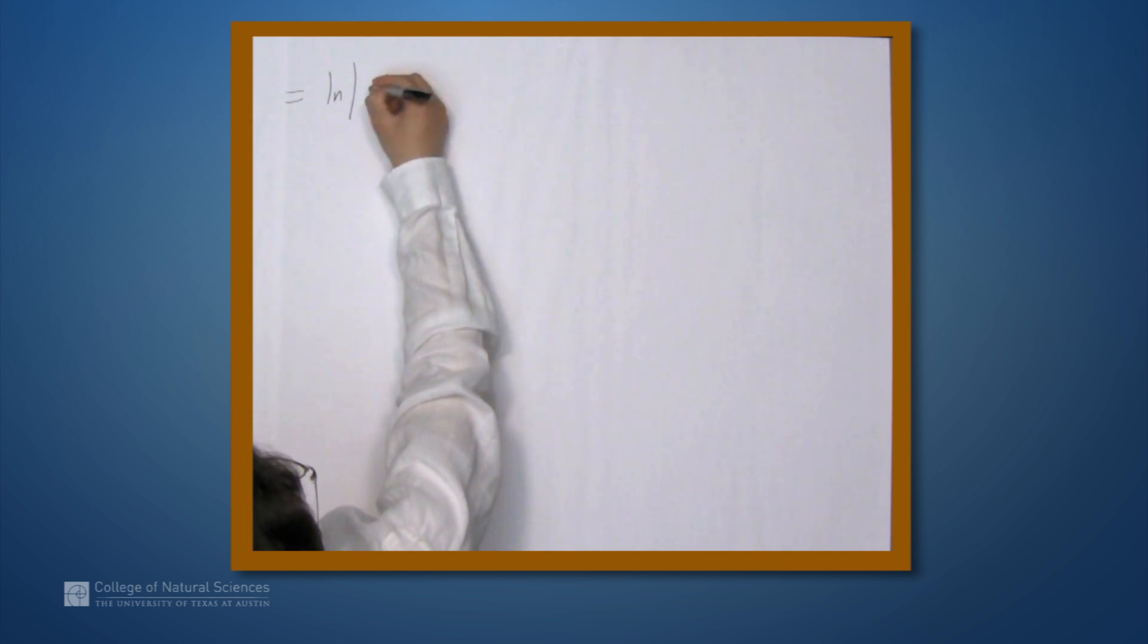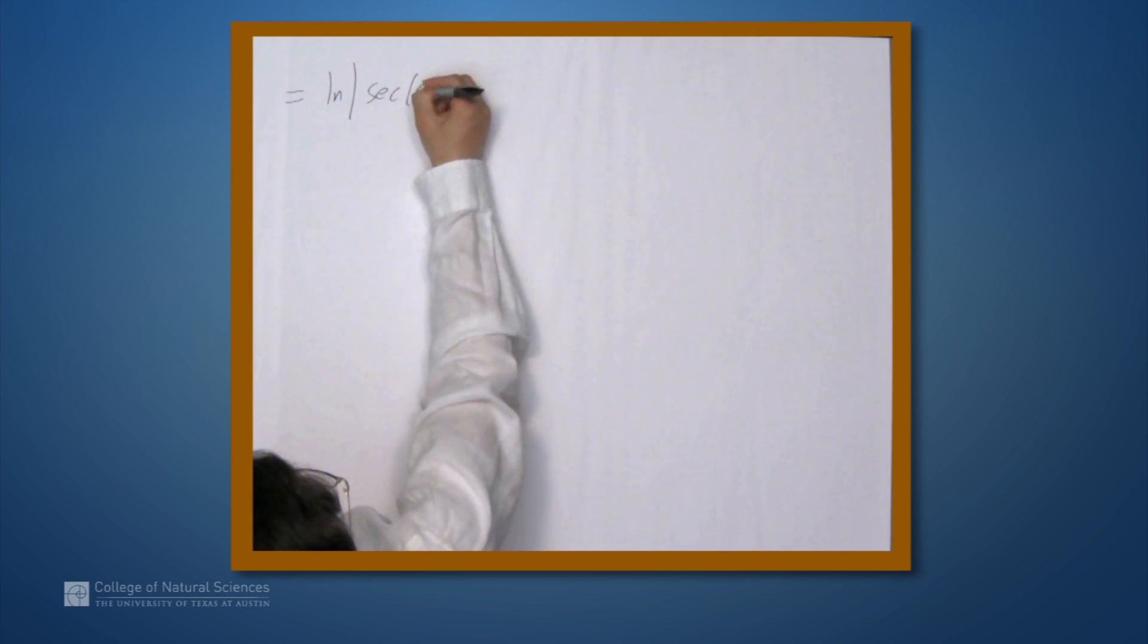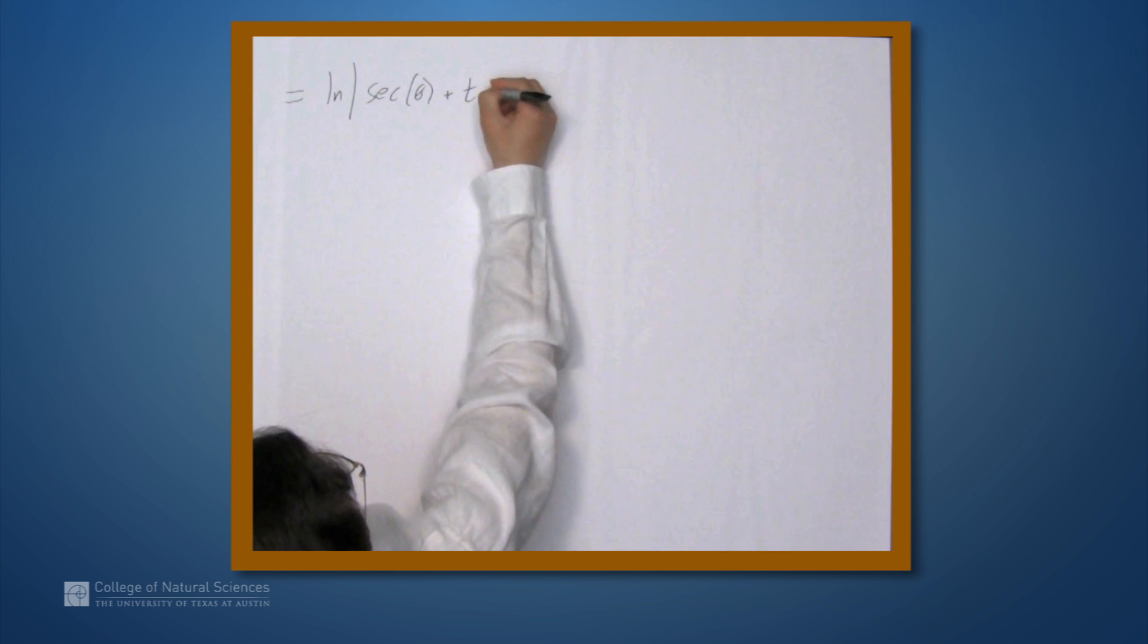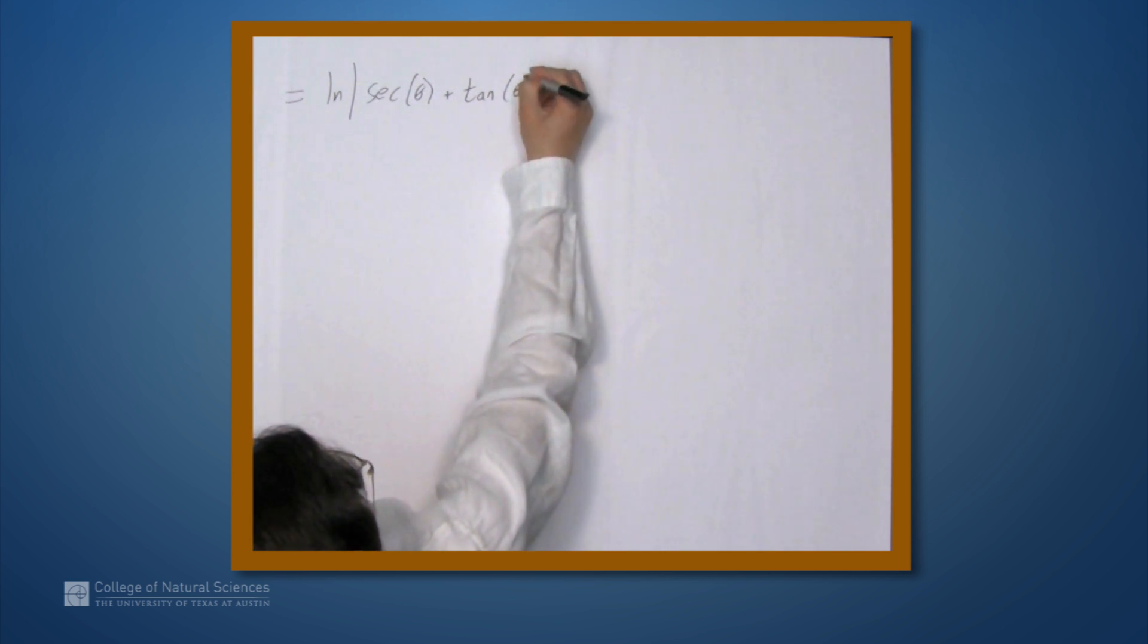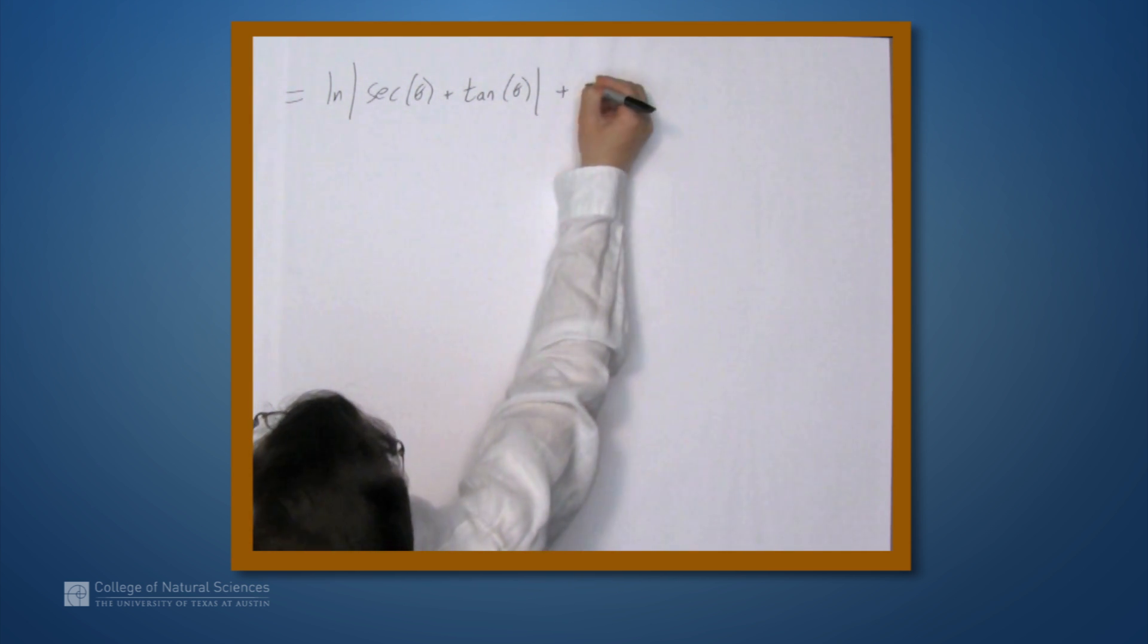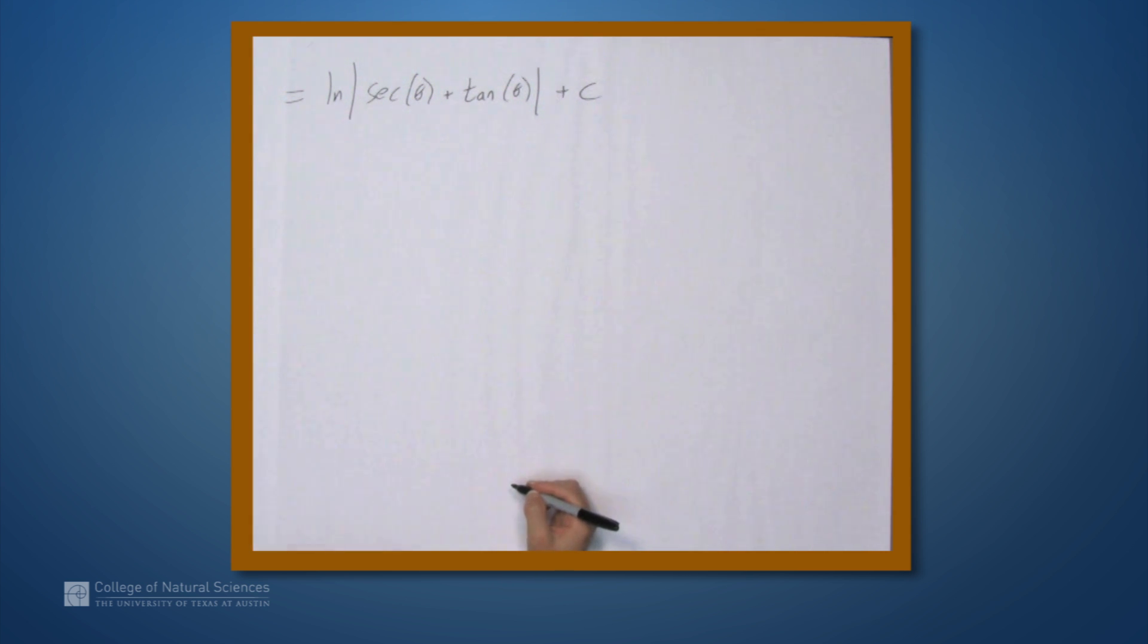The integral of secant theta d theta is the natural log of the absolute value of secant theta plus tangent theta. And don't forget the plus c. But there's one more step remaining, because we want our answer in terms of x. Our original integrand was in terms of x, so we should get an integral in terms of x, not in terms of theta.